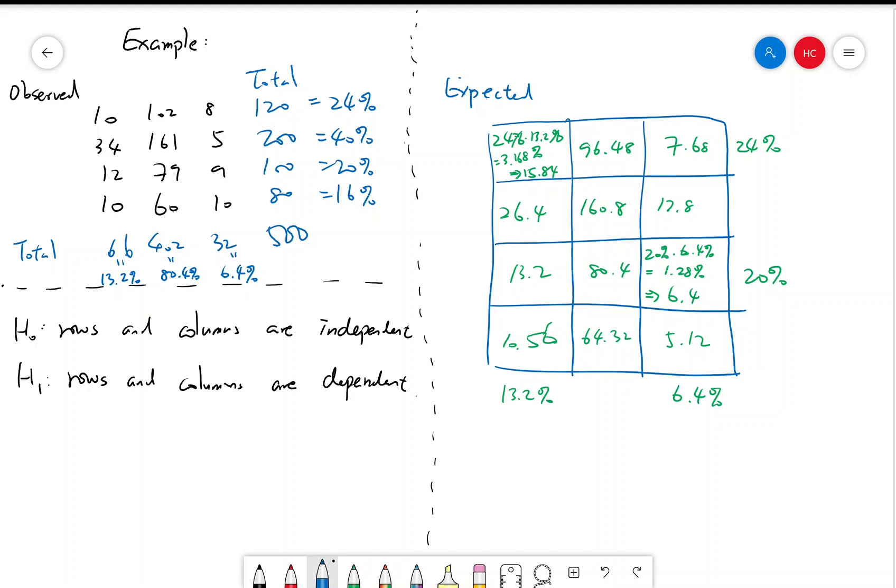And now we need to calculate the chi-squared value. This is our test statistic. So chi-squared is the sum of, technically, O minus E squared over E.